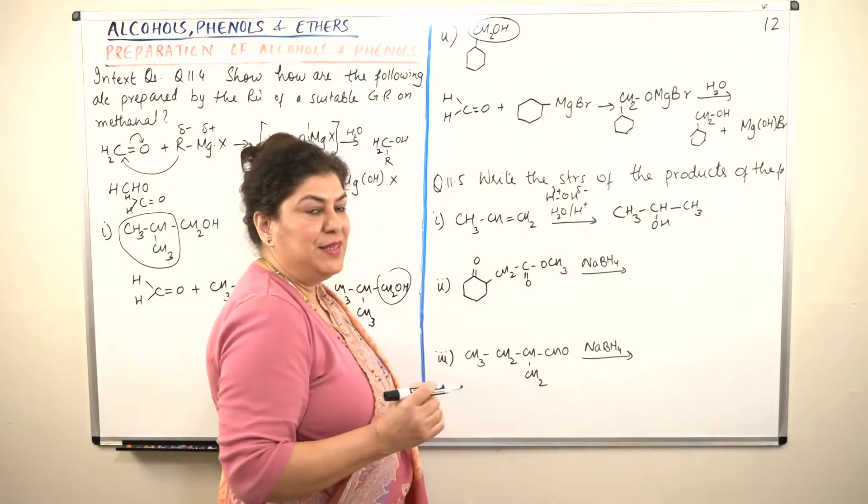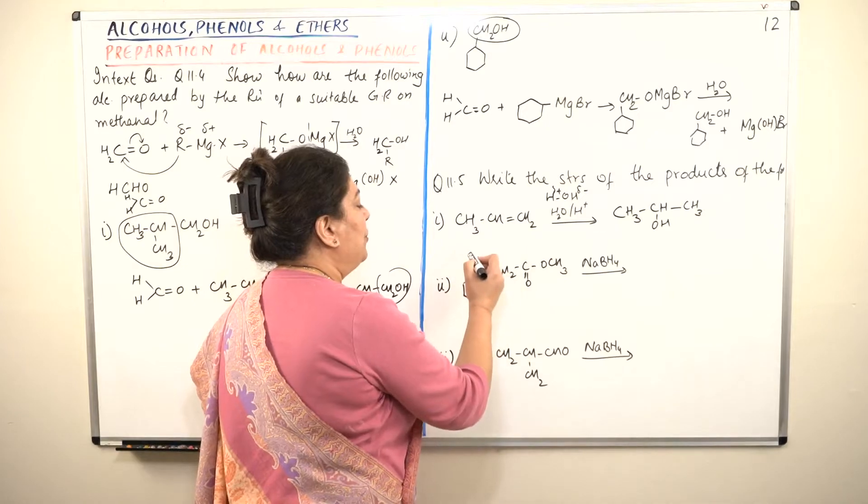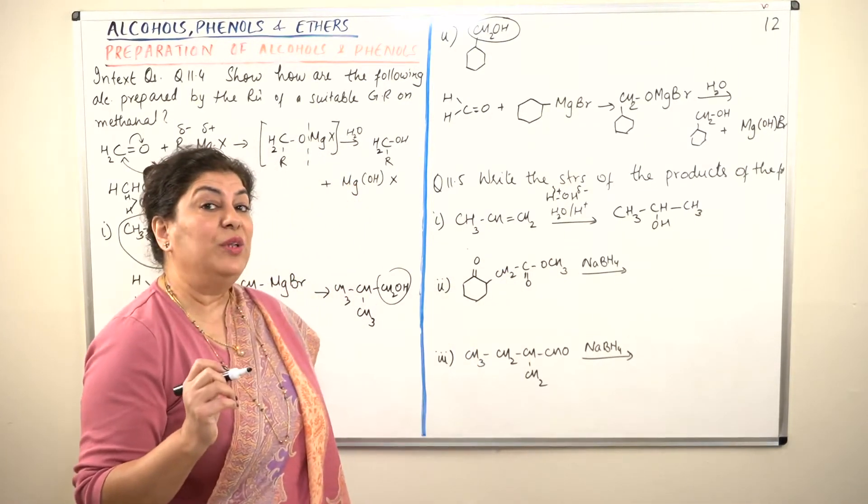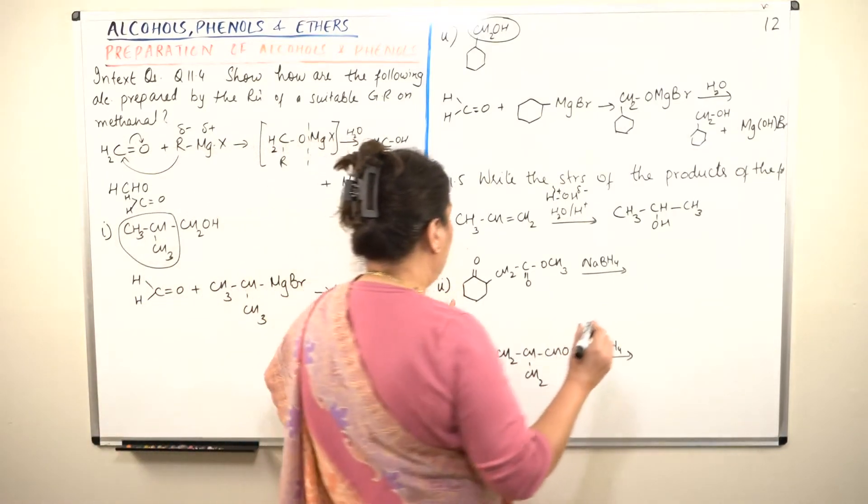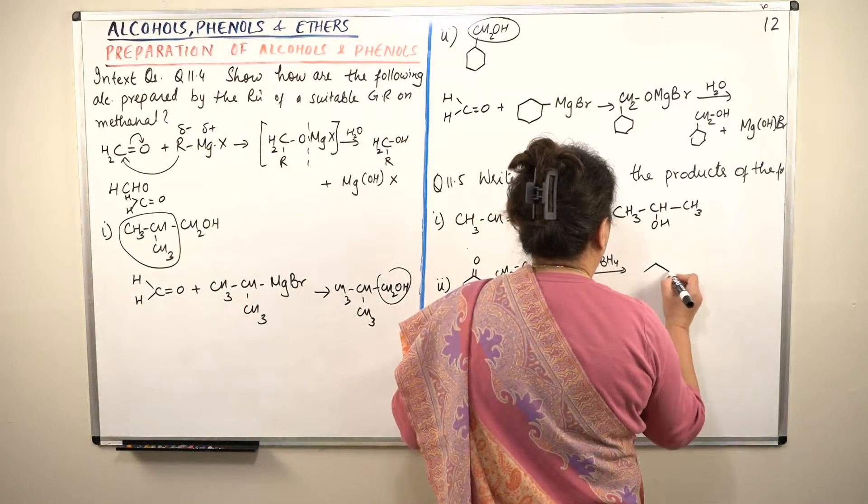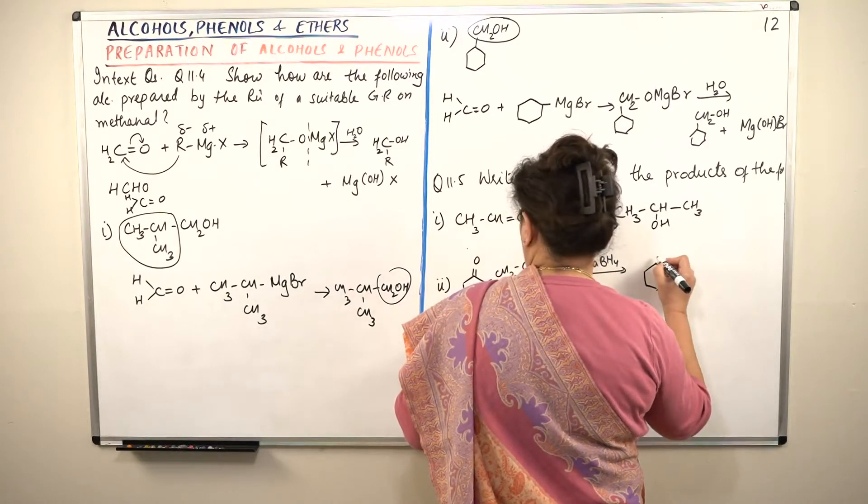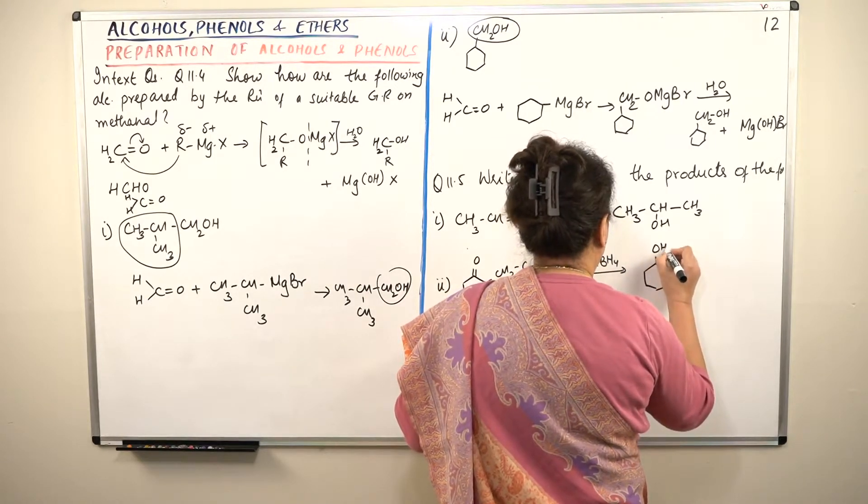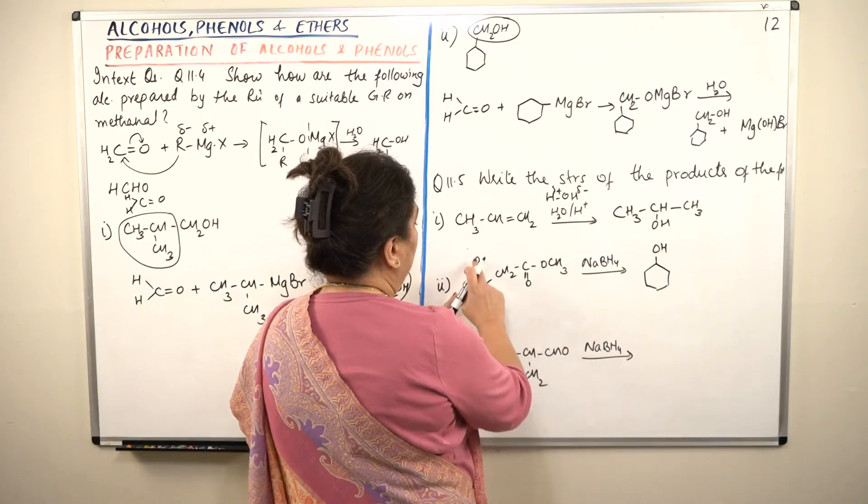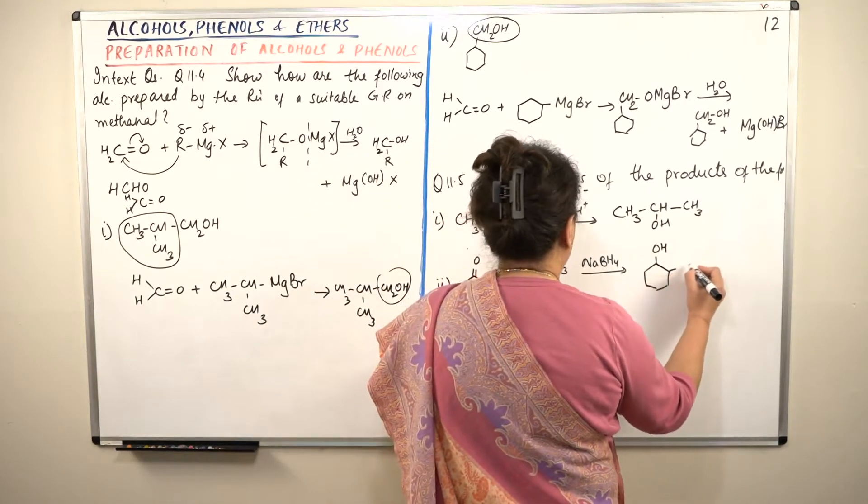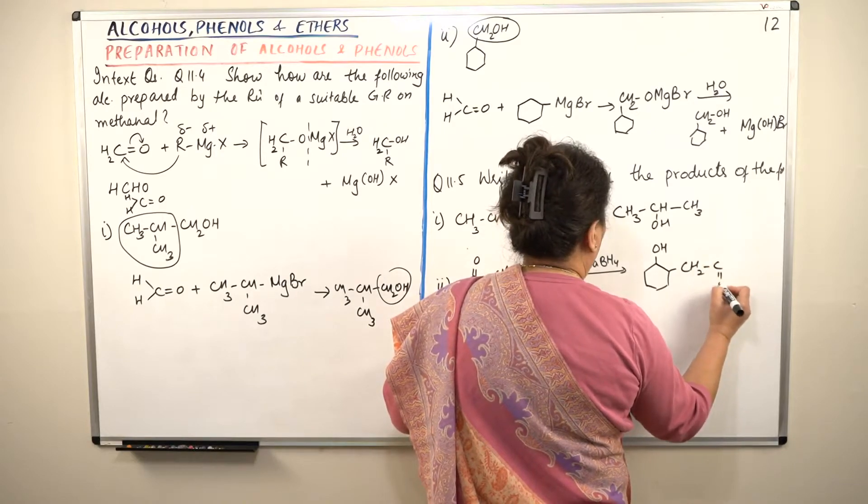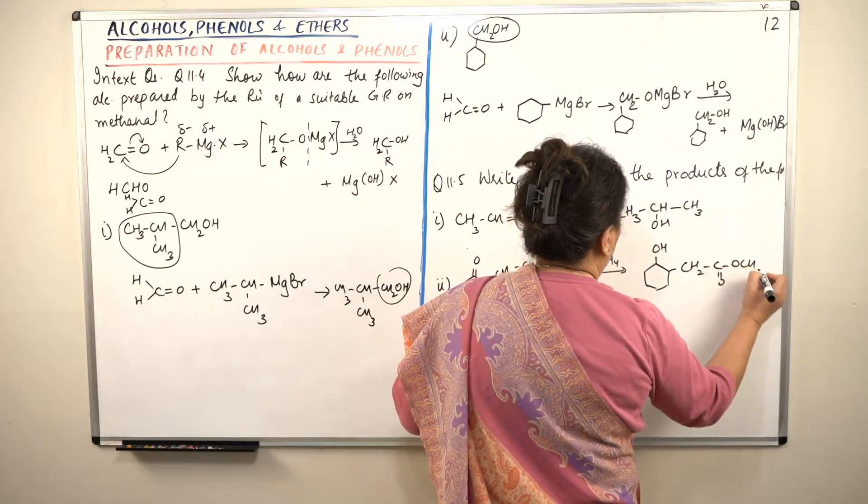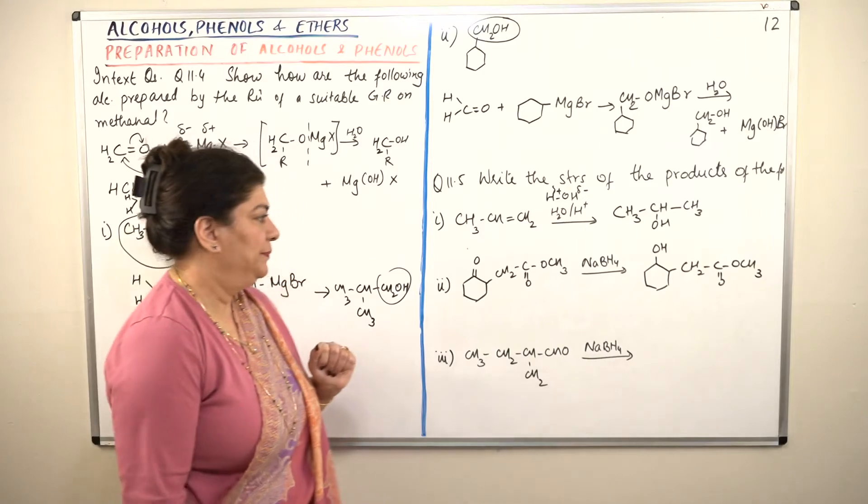So when we are using a reducing agent like this, such a strong reducing agent, we will notice that what will happen, not this part of the ester, rather the reducing agent is going to act, sodium borohydride will act on the ketonic part, not on the ester part. So we find that what happens here, the OH that is formed will be formed here. One hydrogen will attach here and OH will be here and the rest, the ester part CH2-COO-CH3 remains the same.